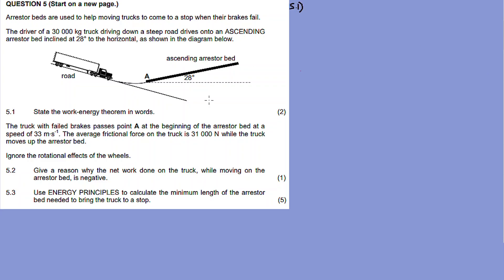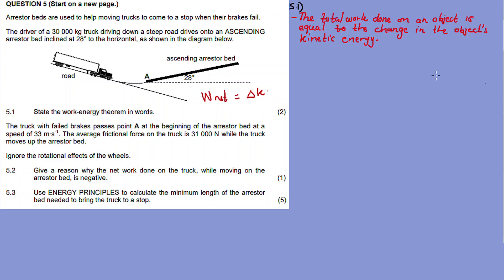The work-energy theorem states that the net work done on an object is equal to the change in the object's kinetic energy. So work net equals the change in kinetic energy.